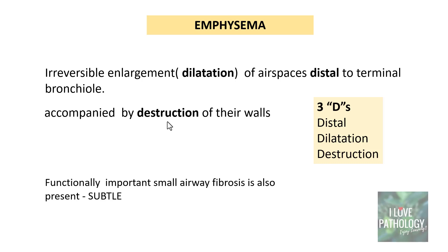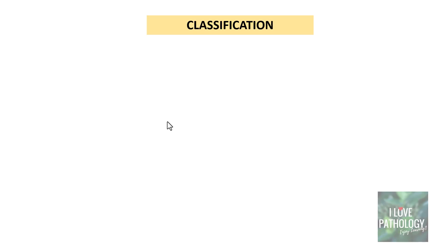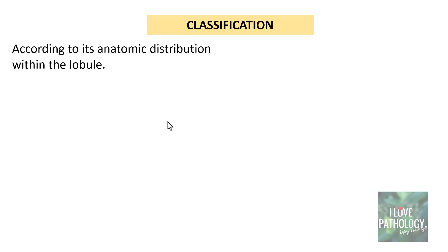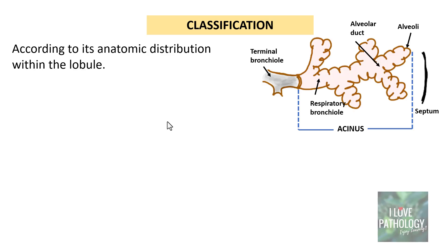Functionally important small airway fibrosis can be present but is very subtle in emphysema. To understand the classification of emphysema, you need to understand the anatomic distribution of the respiratory tree within the lobule. The terminal bronchiole gives rise to respiratory bronchioles, which lead to form alveolar ducts and finally the alveoli. This whole process distal to the terminal bronchiole is known as the acinus.